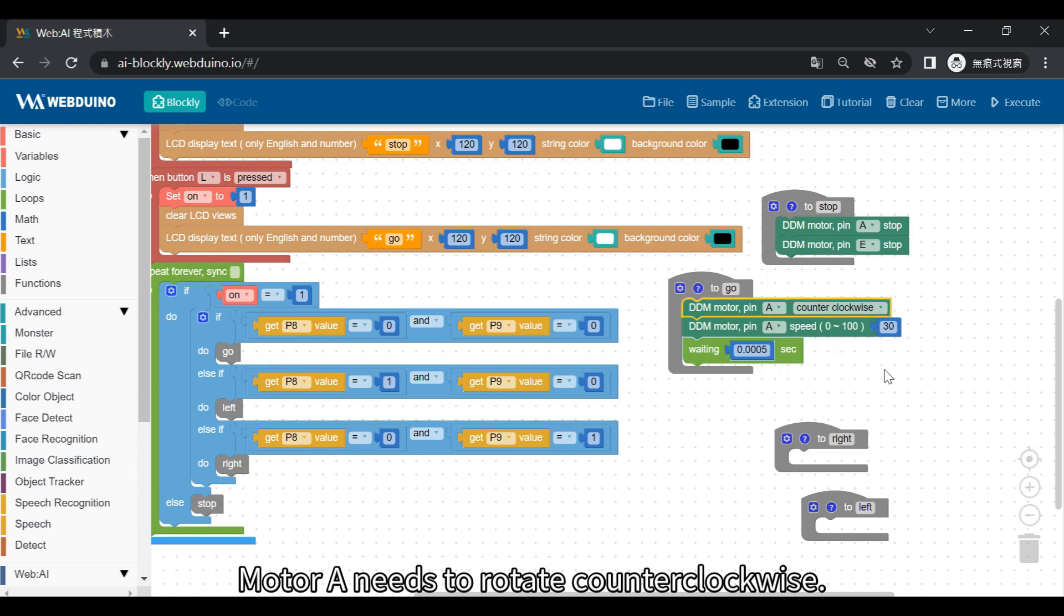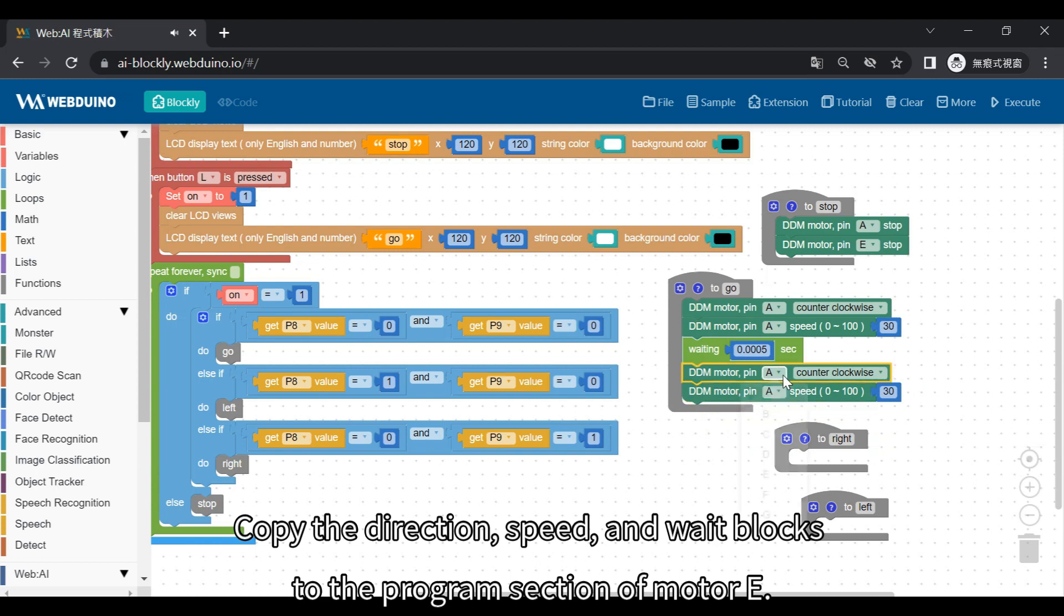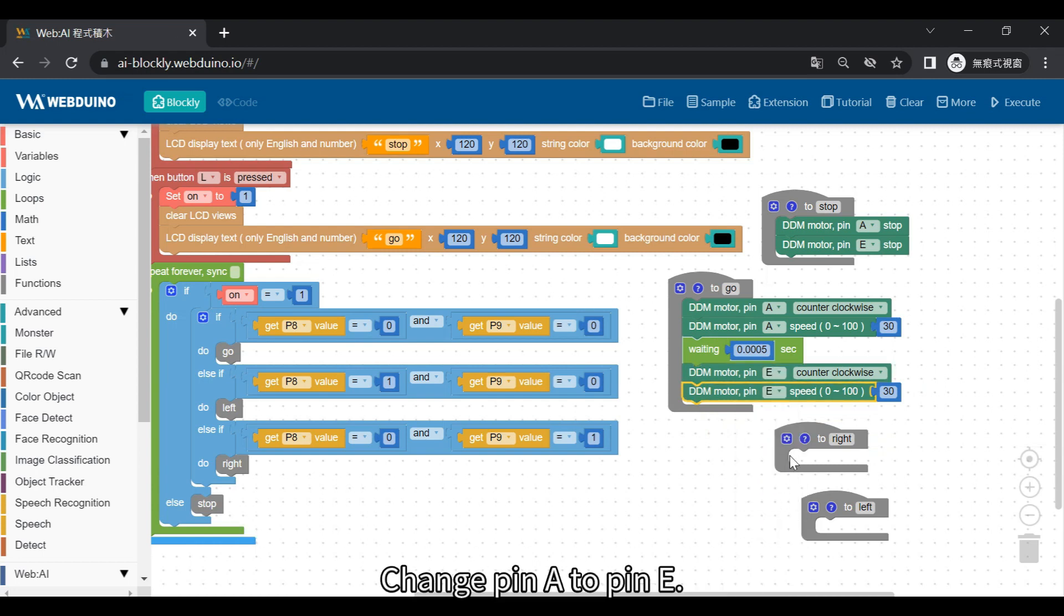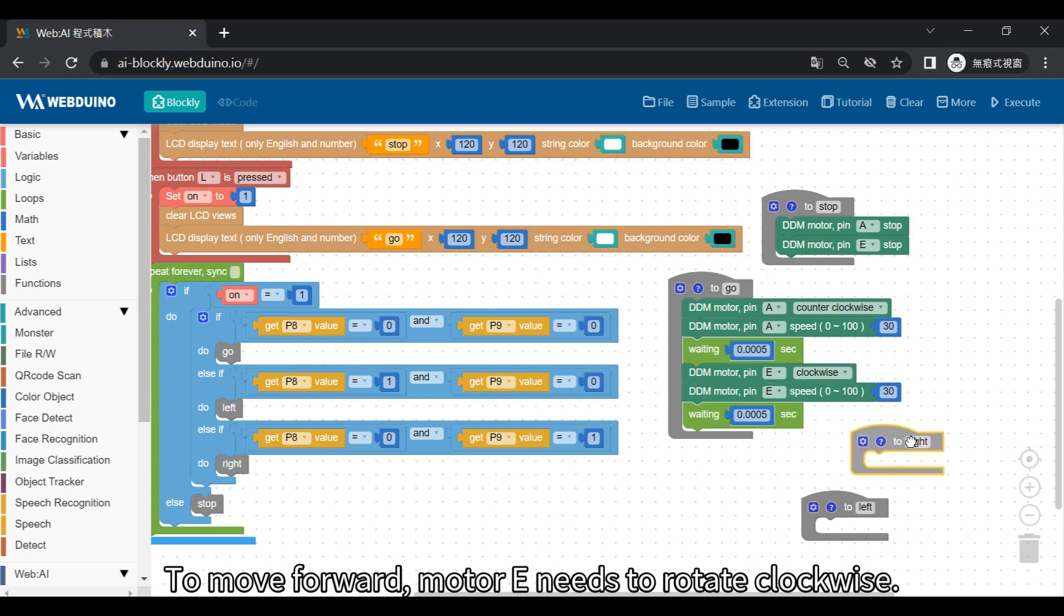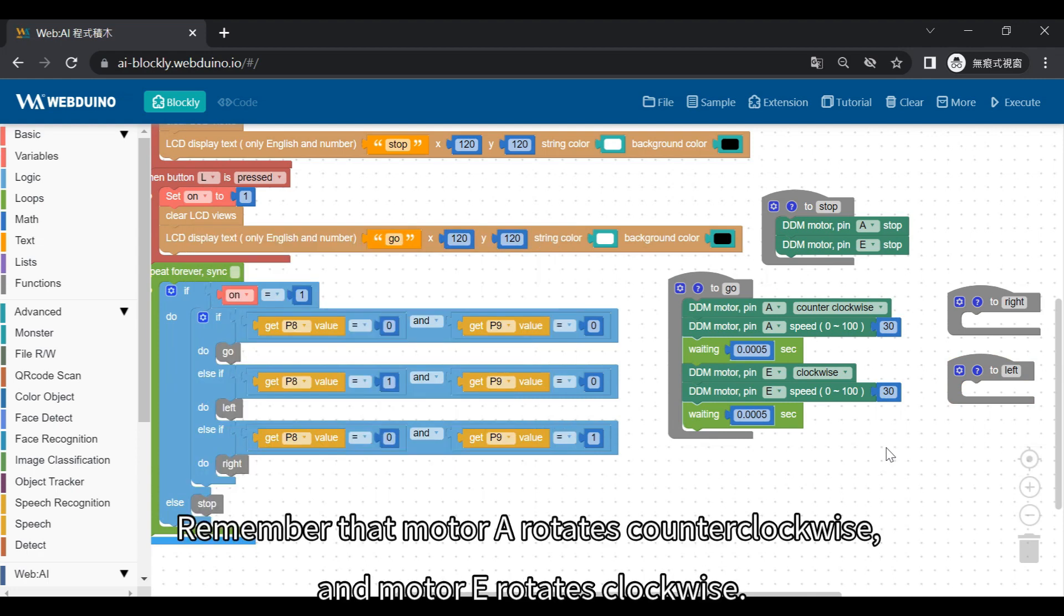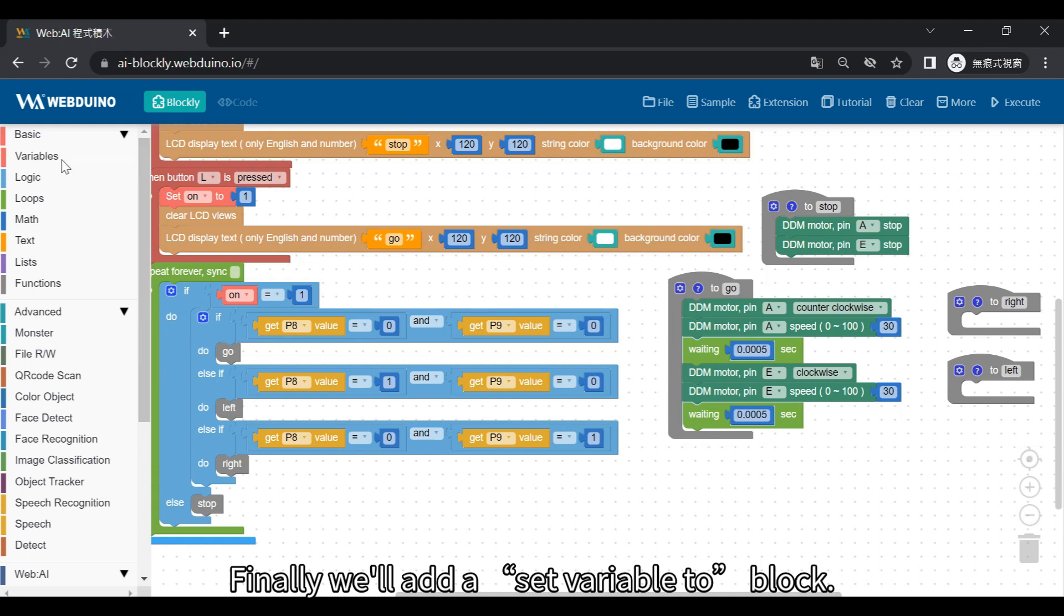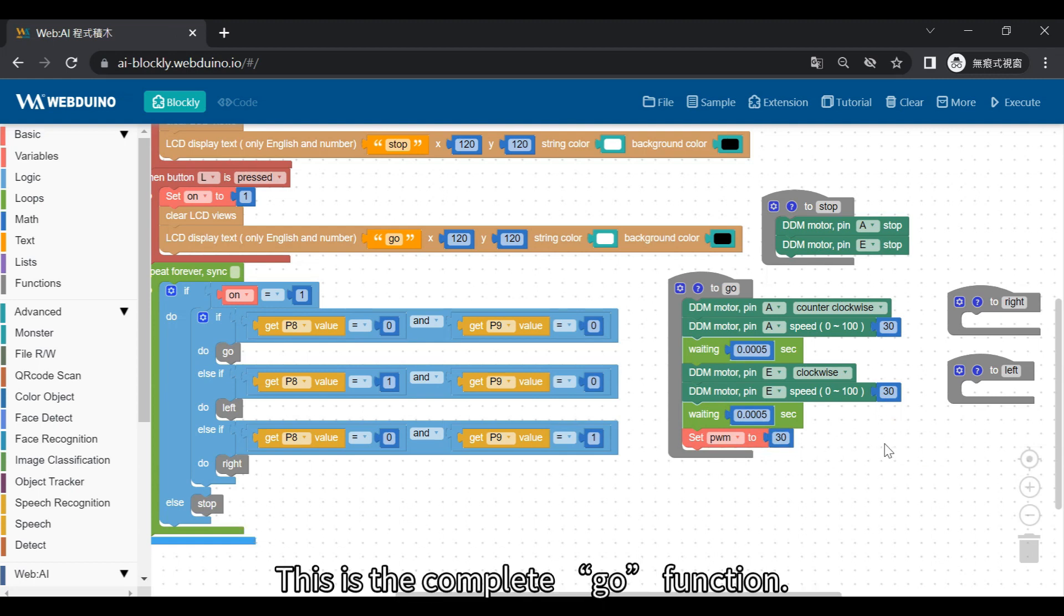Okay, motor A needs to rotate counter-clockwise. Copy the direction, speed, and wait blocks to the program section of motor E. Change pin A to pin E. Now, let's go back to the presentation. To move forward, motor E needs to rotate clockwise. So, change counter-clockwise to clockwise. That completes the motor settings. Remember that motor A rotates counter-clockwise, and motor E rotates clockwise. Finally, we'll add a set variable to block. This part fixes the variable PWM to 30, which prevents it from affecting the other programs. This is the complete go function.